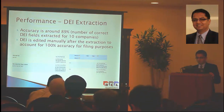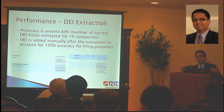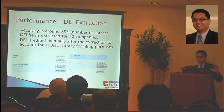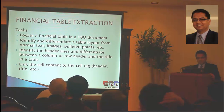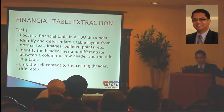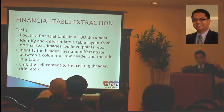This is for 10 companies we tested. After that, it's manually edited, checked, and validated. This is a snapshot of SmartXBRL version 1.0. These are the fields we try to extract from a 10-Q or 10-K document. The next task is financial table extraction. Again, you have to locate where those tables are, identify the header lines, and differentiate tables and layout from normal text, images, and bullet points.